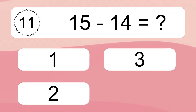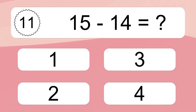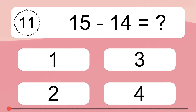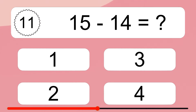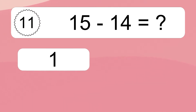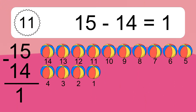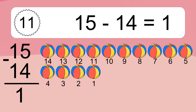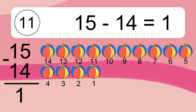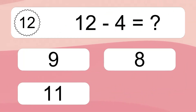15 minus 14 equals what? 15 minus 14 equals 1. Let's count it: 14, 13, 12, 11, 10, 9, 8, 7, 6, 5, 4, 3, 2, 1.